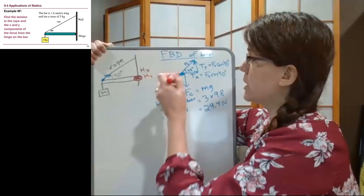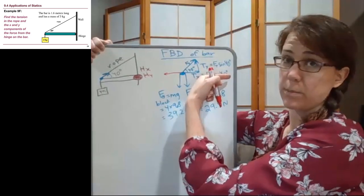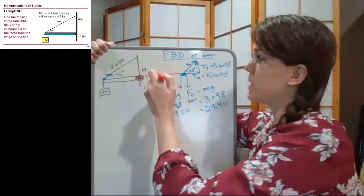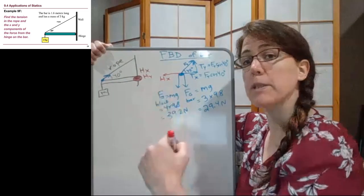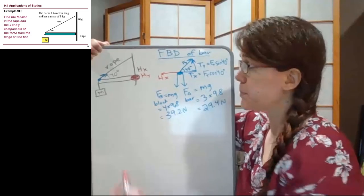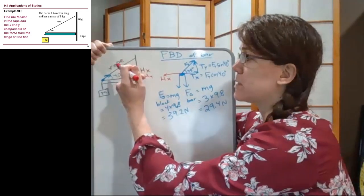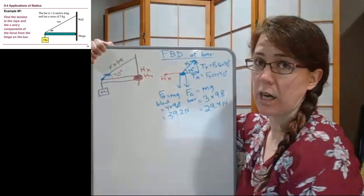So in the horizontal direction, it is obvious to us because there is only right forces at the moment, that there has to be a left force coming from that hinge. But the up and down part of the hinge is less obvious to us. It is possible that that hinge is preventing this thing from sliding downwards, or it is preventing this thing from sliding upwards.